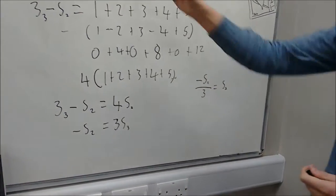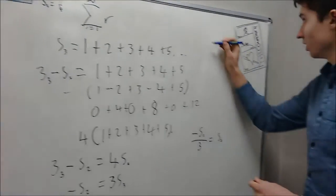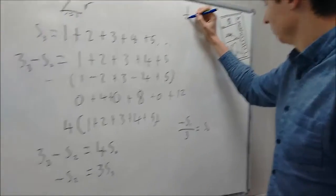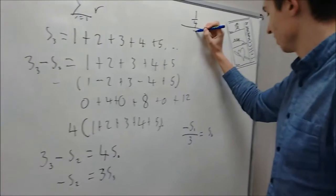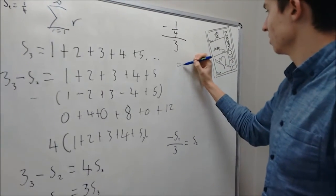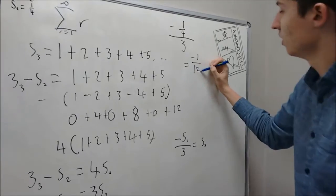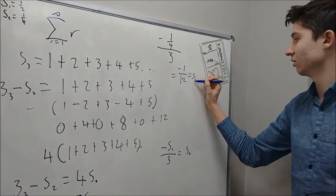Minus S2 was a quarter. So right here, we can do one quarter all over 3, make it minus, which is actually equal to minus 1/12 equals S3.